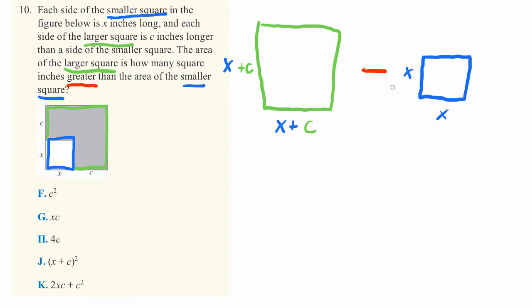There's two important concepts you're going to need to understand to solve this particular problem. One is just the area of a square, which is pretty simple. If we know how long the sides of the square are, we just multiply them together to get the area.